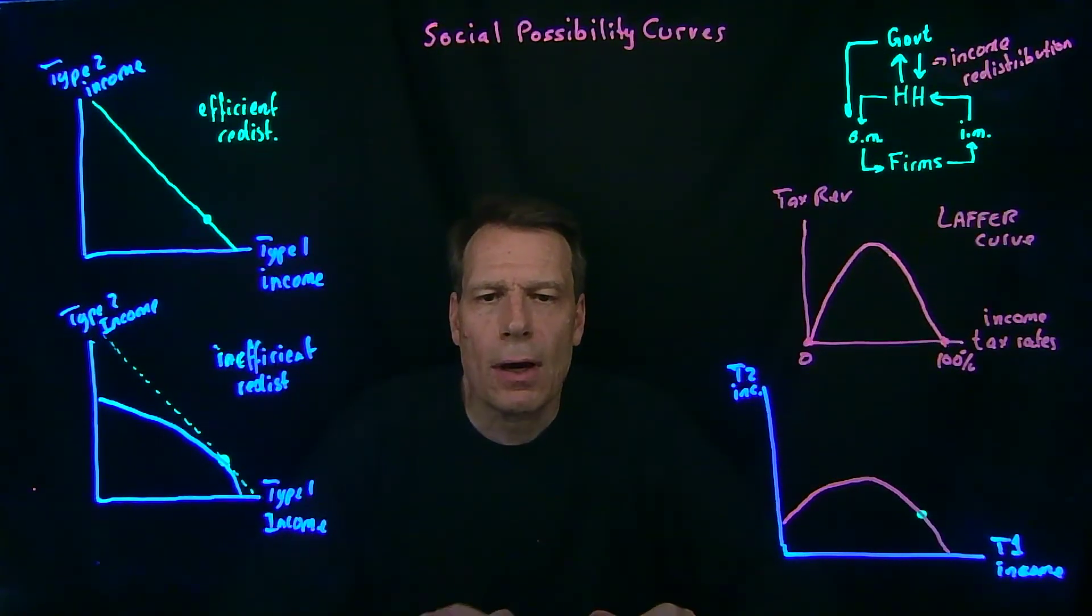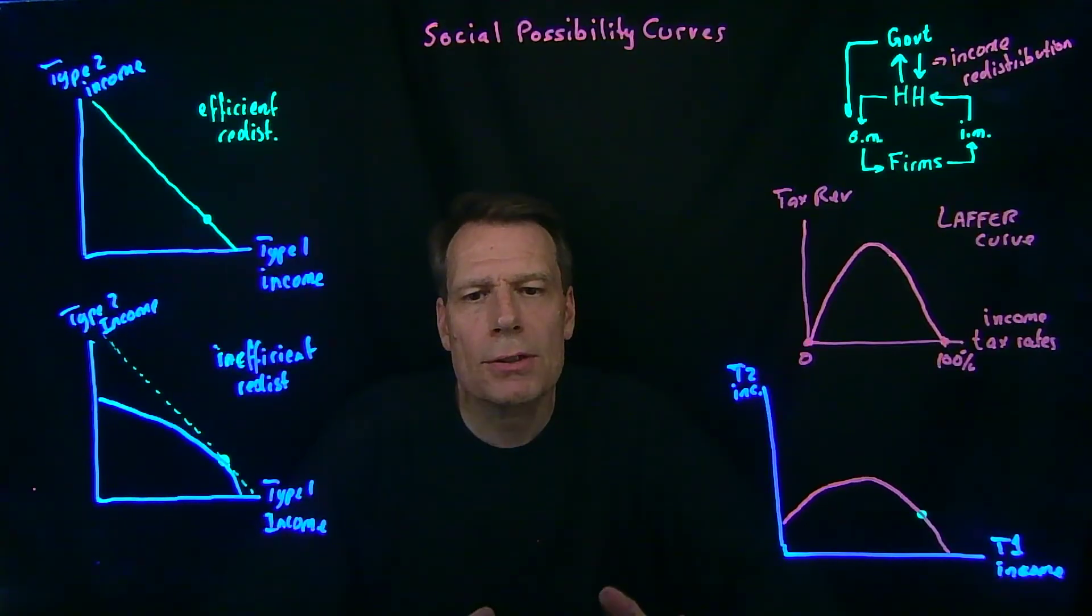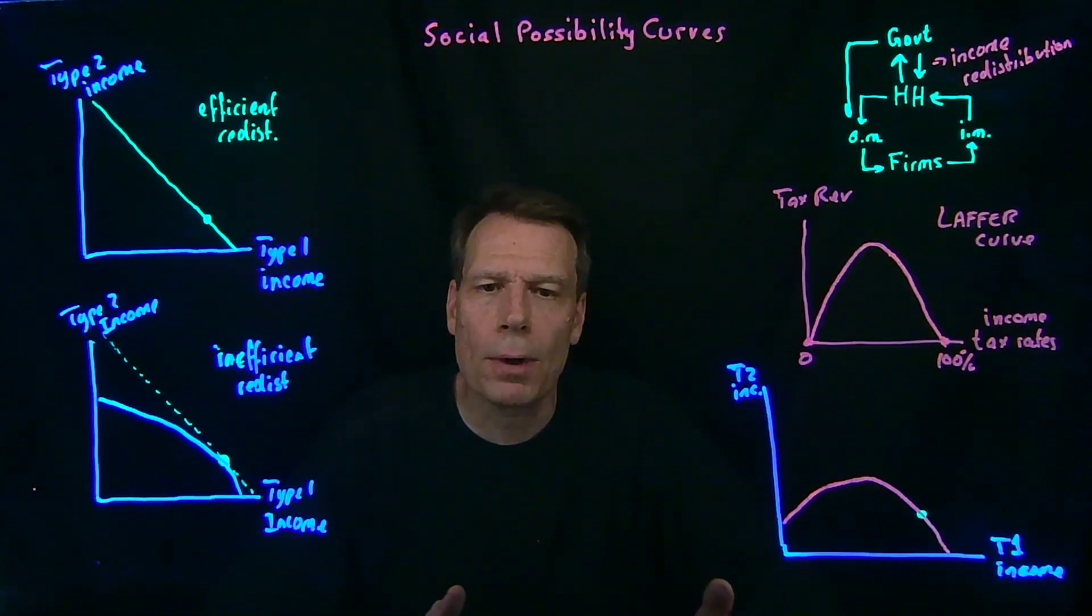So depending on how inefficient our redistribution instruments are, we might get different kinds of shapes for the social possibility curves. But the fact that we are using inefficient mechanisms for redistributing means that there is a cost of redistribution. There is a benefit because we're trying to achieve an objective of either alleviating poverty or reducing income inequality, but there's also a cost because we use inefficient ways of redistributing from one person to another.